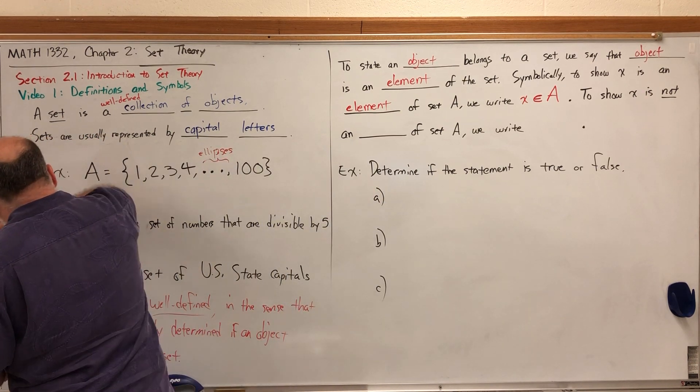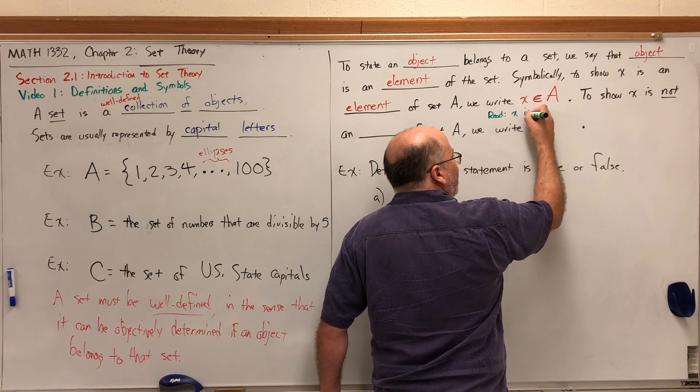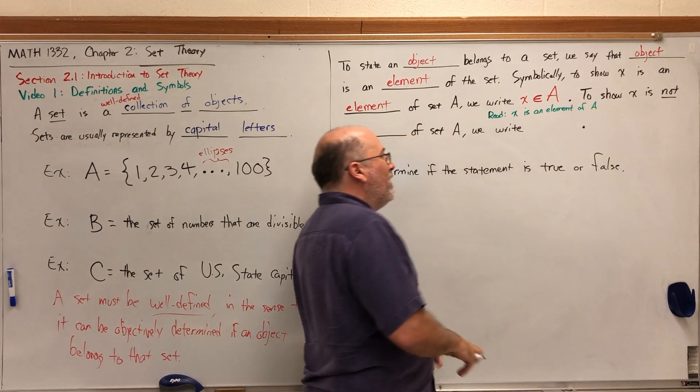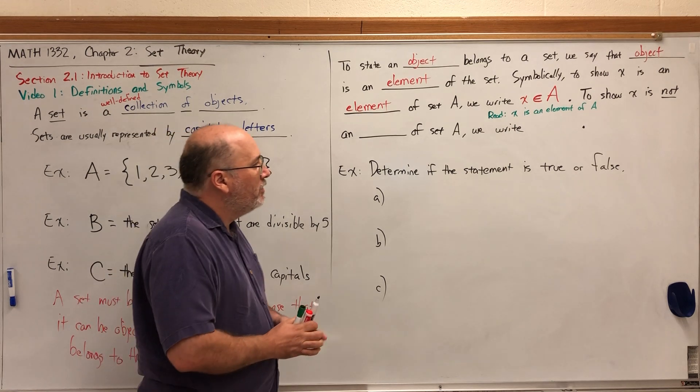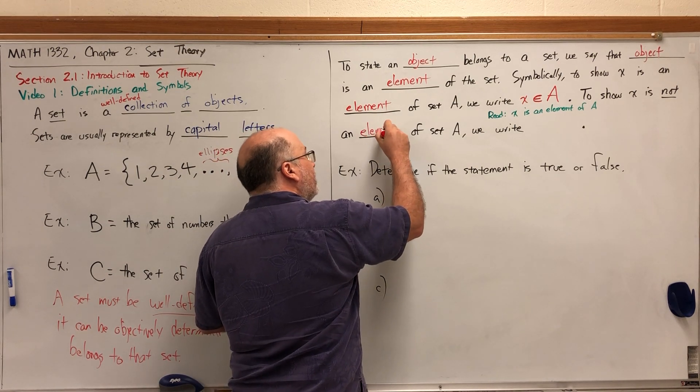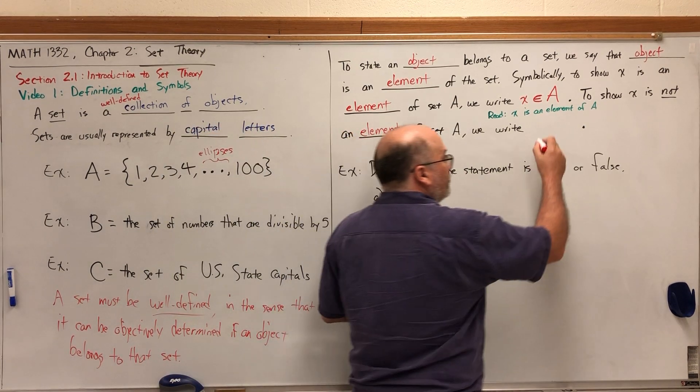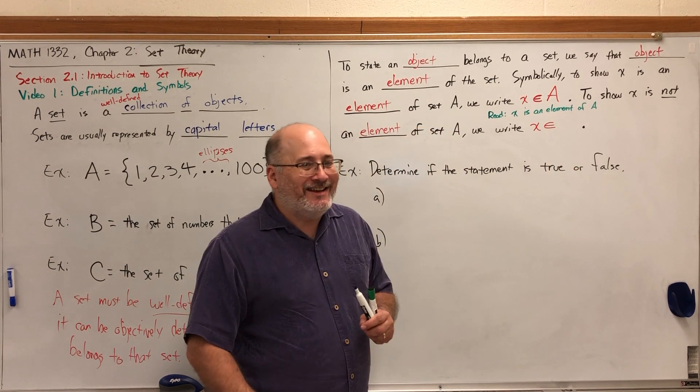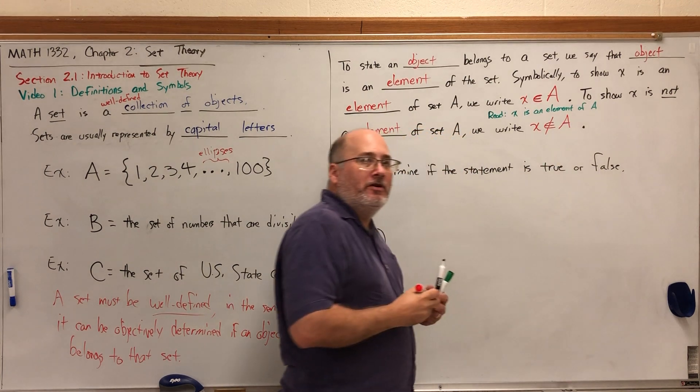Those symbols would be read as 'x is an element of A,' and it is the symbolic way to say that an object belongs to a collection of objects. Vice versa, to show x is not an element of A, all we have to do is write the exact same symbols but put a slash through it—fairly standard mathematical fair for saying the opposite of something.